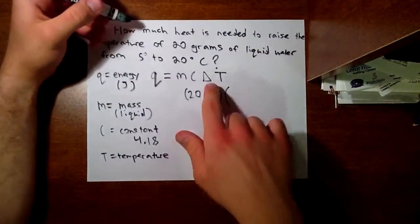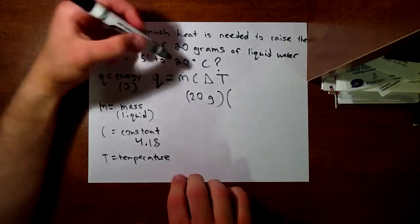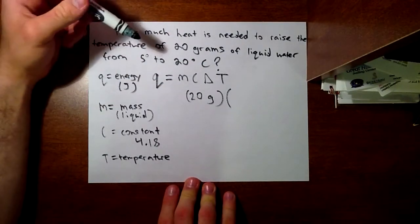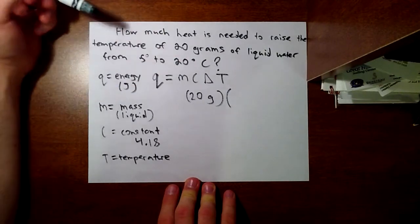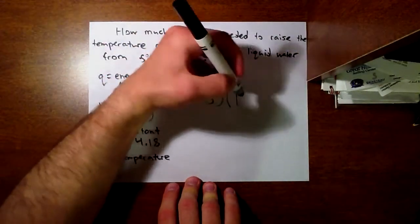For your delta T, well, delta T is the change in temperature. You start with 5 and you end with 20, so the change in temperature is 15 degrees.